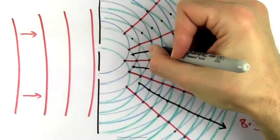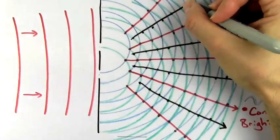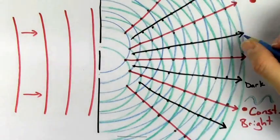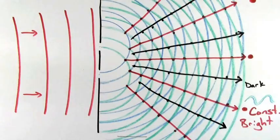So this is why we saw an alternating pattern of bright and dark spots on the wall. The bright spots are where the waves are constructively interfering, and the dark spots are where the waves are destructively interfering.